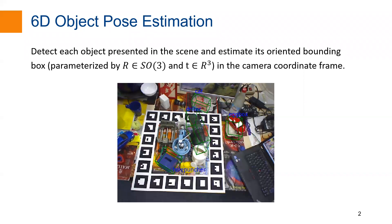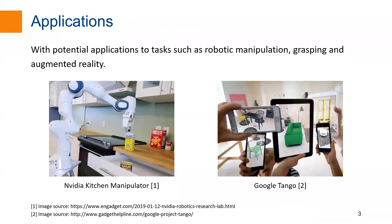The task of 6D object pose estimation aims to detect each object instance in the scene, as well as estimate its orientation and location in the camera coordinate frame. Accurate pose estimation is an important foundation for many applications, such as robotic manipulation, grasping, and augmented reality.